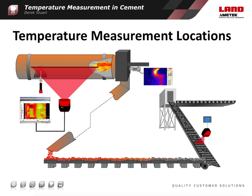The key locations for temperature measurement in the cement process are the burning zone, the material in the heating and calcining zones, the kiln shell, and the temperature of the clinker in the clinker cooler. These are different measurements, and there are different challenges for each of them. No one approach is suitable for everything.